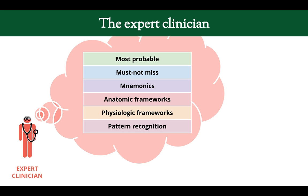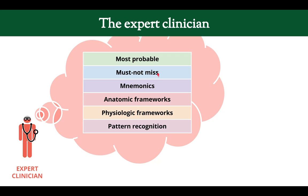The expert clinician won't solely rely on pattern recognition because they'd probably miss something. Instead, they use all of these different approaches: most probable — this looks like CHF, but most probable is asthma, could this be asthma? Must not miss — could this be a PE, a heart attack, or a tension pneumothorax? Using mnemonics, they might ask: could this be DKA — diabetic ketoacidosis — a high acid buildup causing rapid breathing? They use anatomic and physiologic frameworks as well to broaden their differential diagnosis.